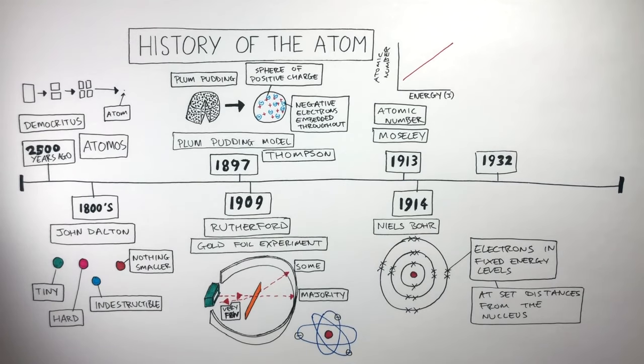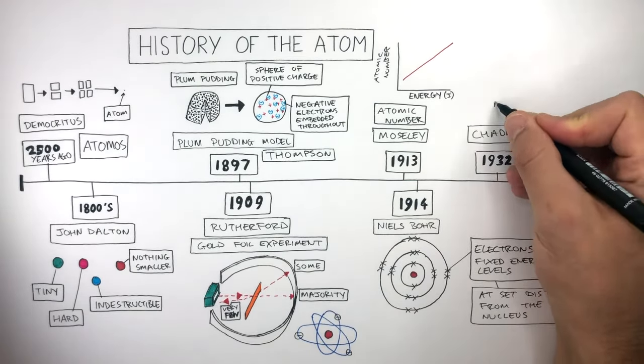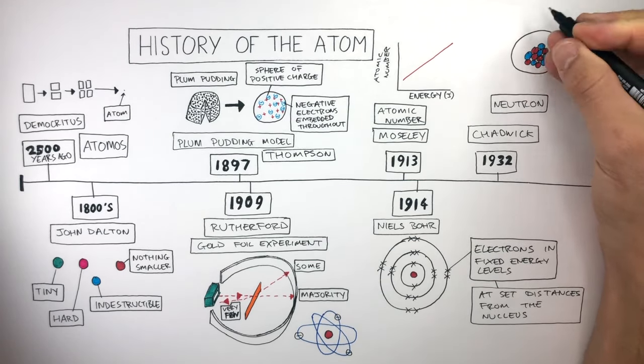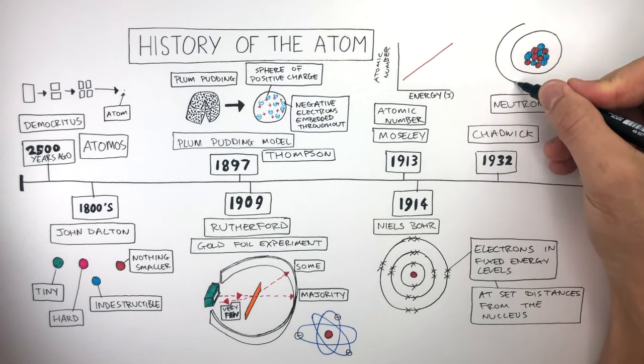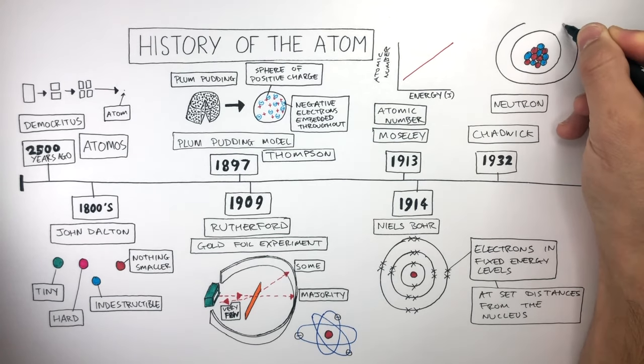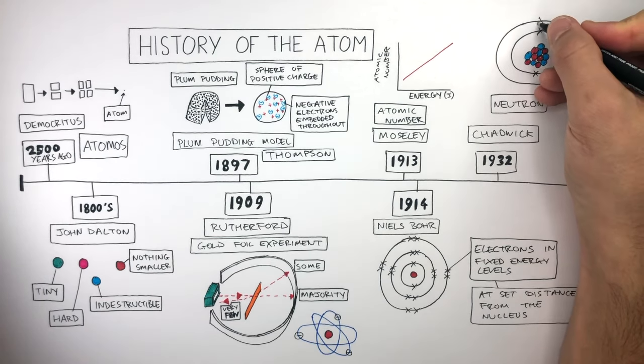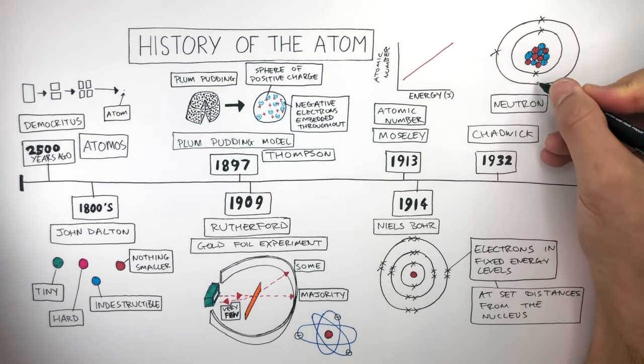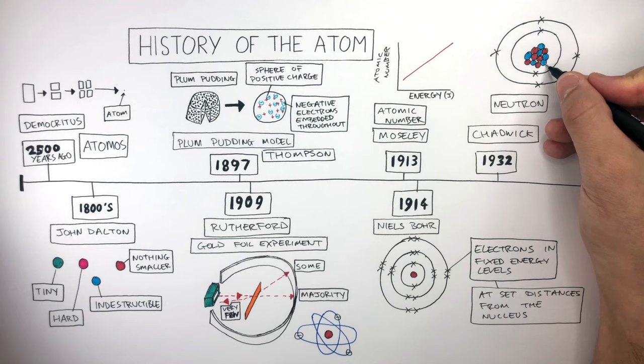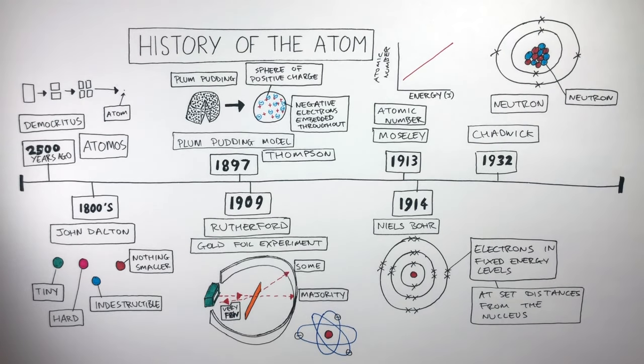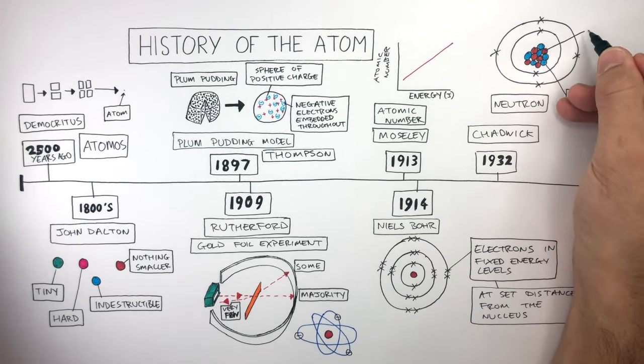In 1932 Chadwick discovered the neutron. Chadwick's discovery built on Bohr's model of the atom where the nucleus is at the center of the atom and there are shells which contain electrons at set distances from the nucleus. The blue circles represent the neutrons discovered by Chadwick and the red circles represent the protons.